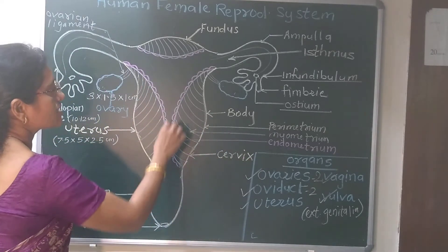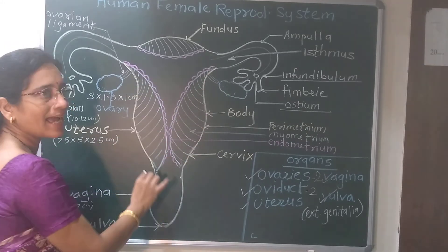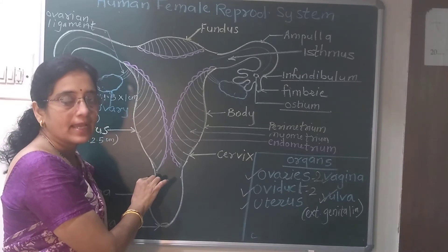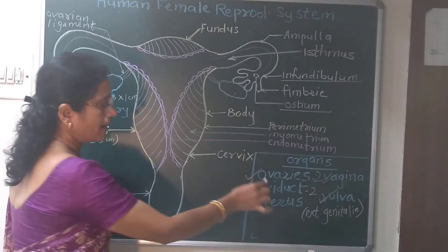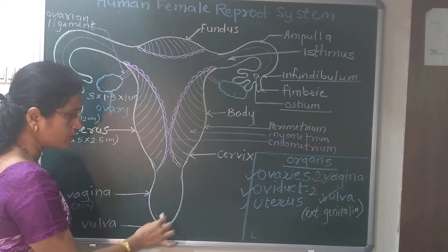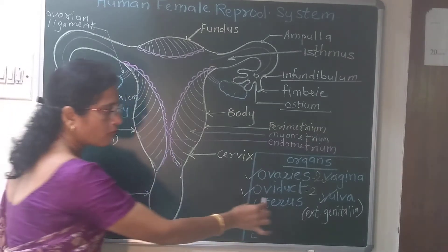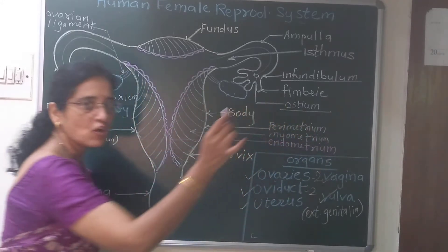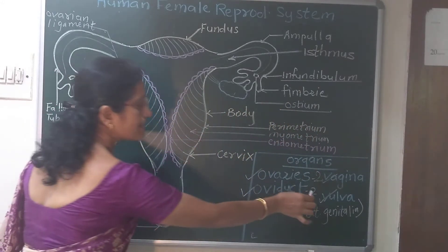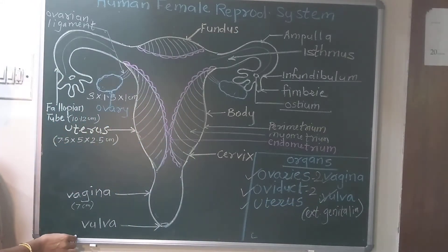The next organ is uterus — a large bag-like structure. It is called as uterus, single uterus. Uterus continues into a passage called as vagina, which is also called as birth canal. And vagina opens outside by vulva.